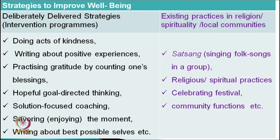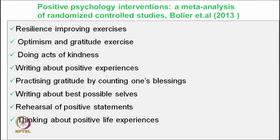In existing practices, we can identify some local practices. For example, in one of our research, we identified that satsang — singing folk songs in a group — is contributing to our well-being. There could also be various religious and spiritual practices. We can think about celebrating festivals or community functions and what kind of impact they have on our well-being. These are two main types of intervention approaches.